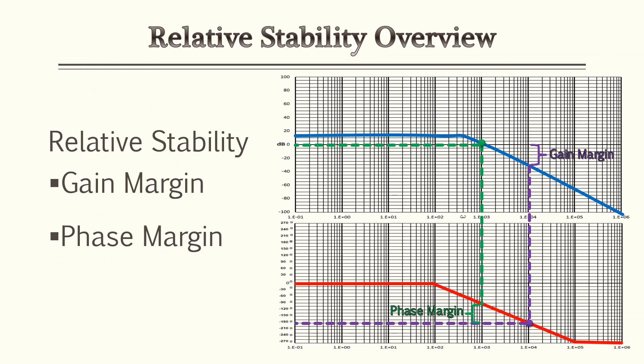For this lesson we'll be going over relative stability. Relative stability is a very easy one to understand and learn. However, if you've never seen it before, it's best to get an overview of it — that way it doesn't bite you later and it's an easy problem you could have answered in five seconds. Relative stability consists of your gain margin and your phase margin, which we'll go over in the later slides.